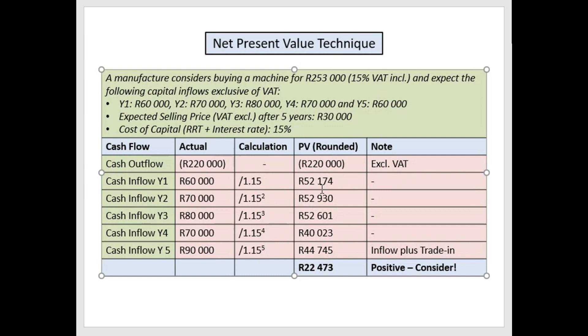Now simply add all the amounts, remembering that the first one was negative. If your final answer is positive, it means the rate you are achieving is more than the fifteen percent you hoped for — and you can consider the project. If it is negative, you stop right there and don't consider going on with the project, because it's not beating your required rate of return. In this particular case the answer is positive, so we can consider it.